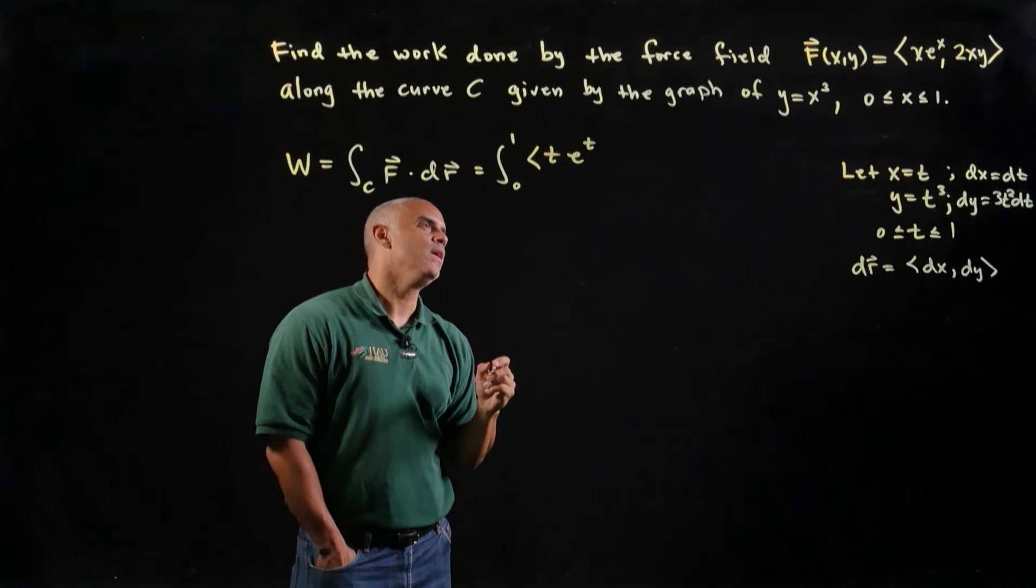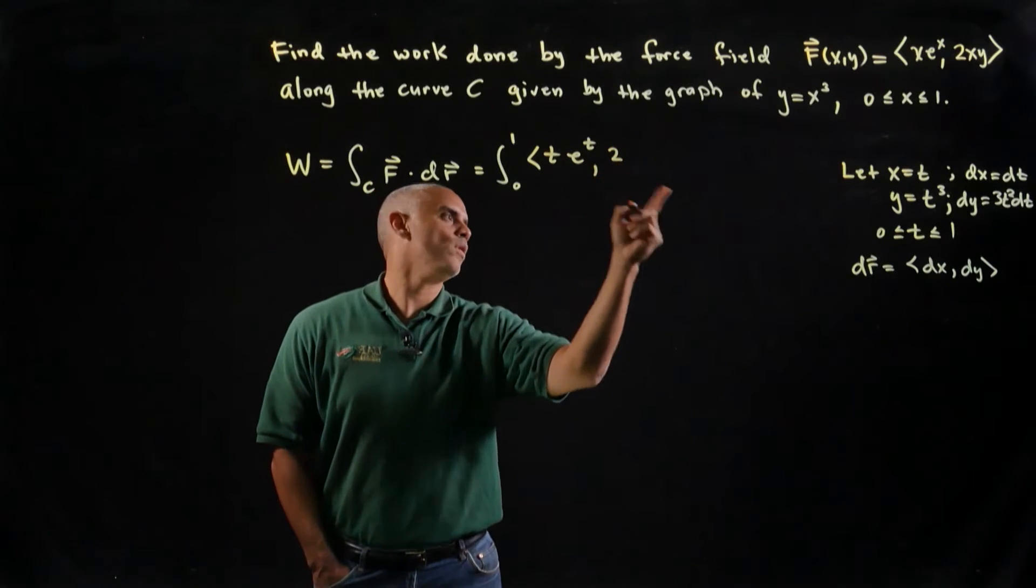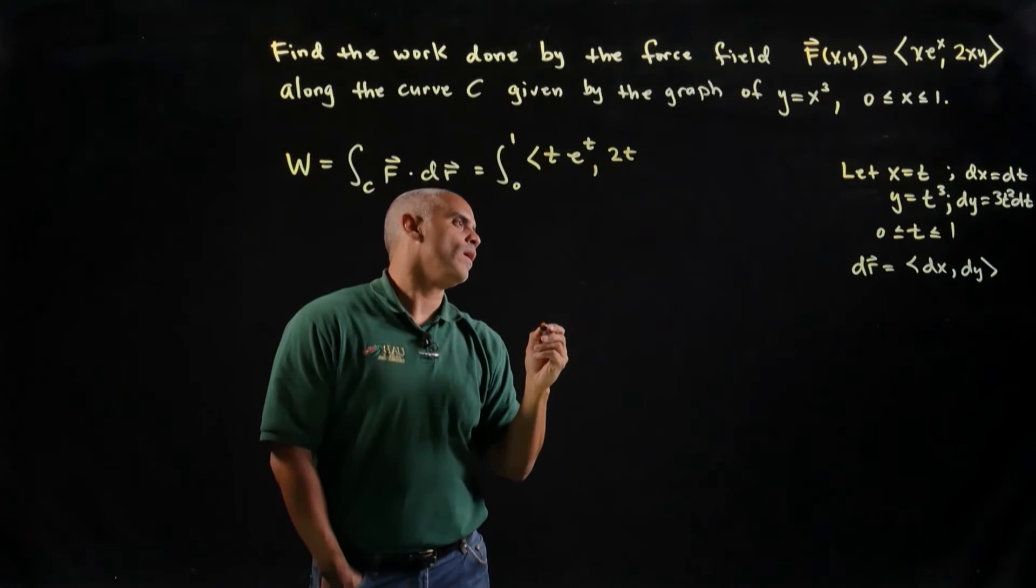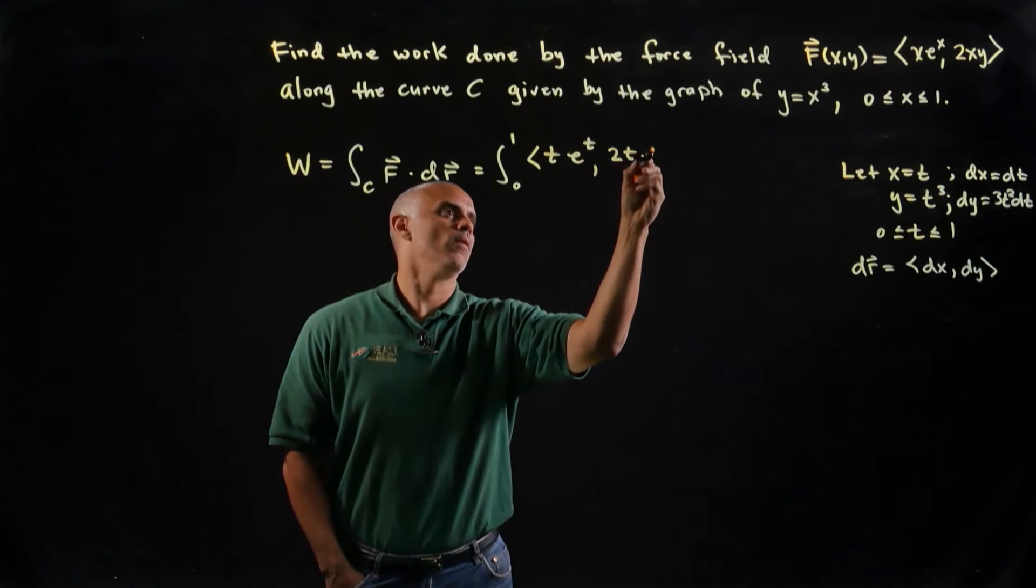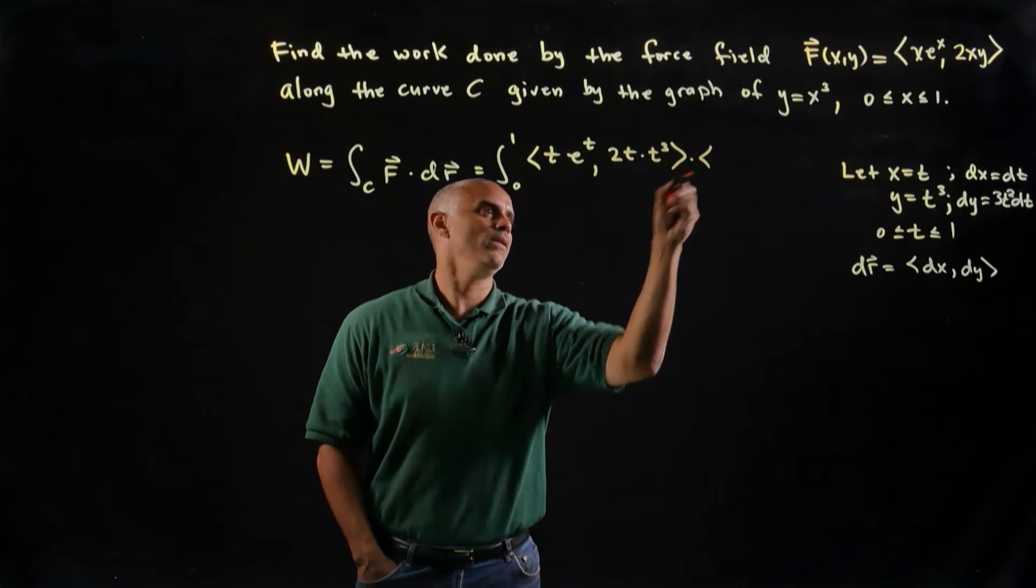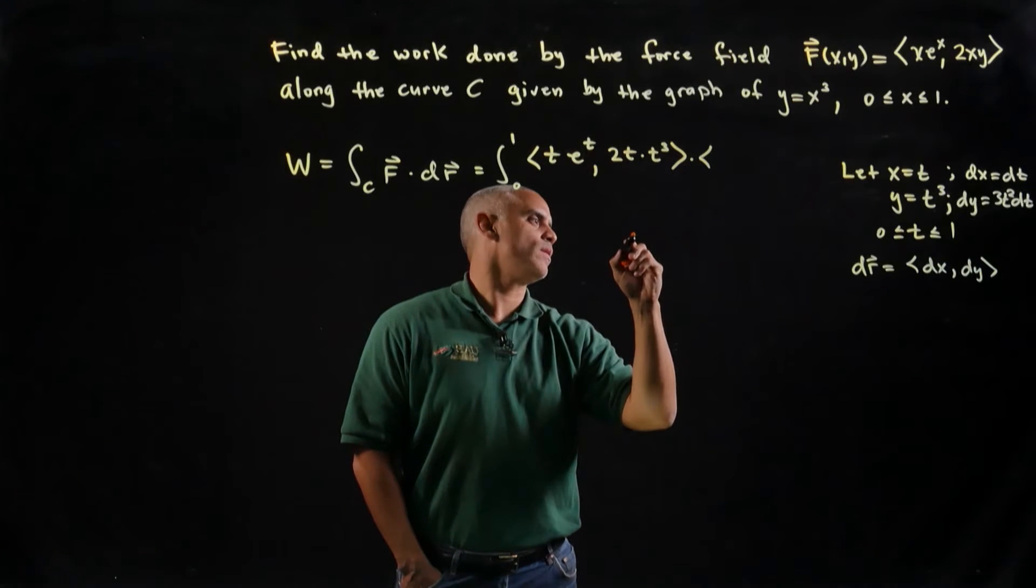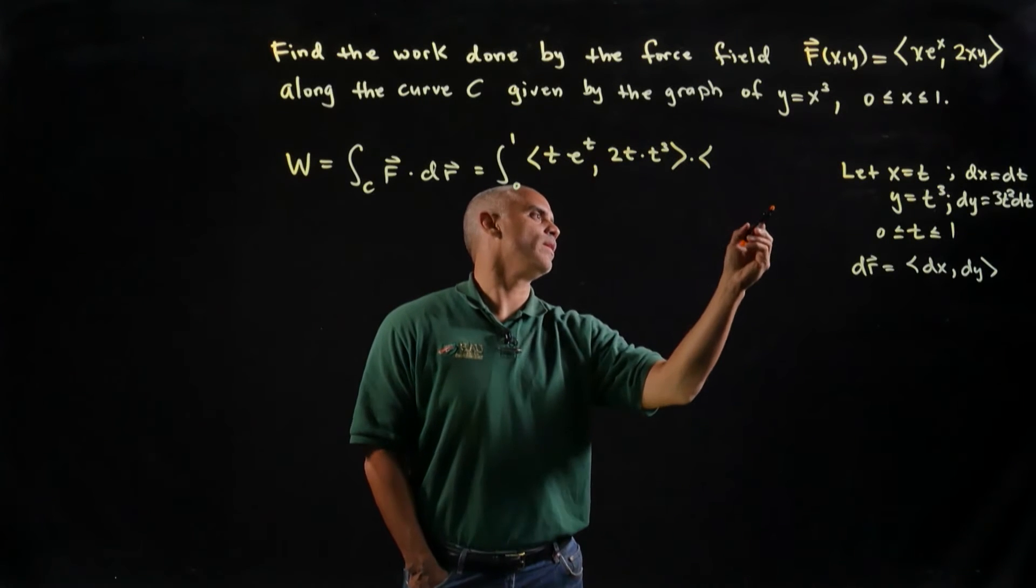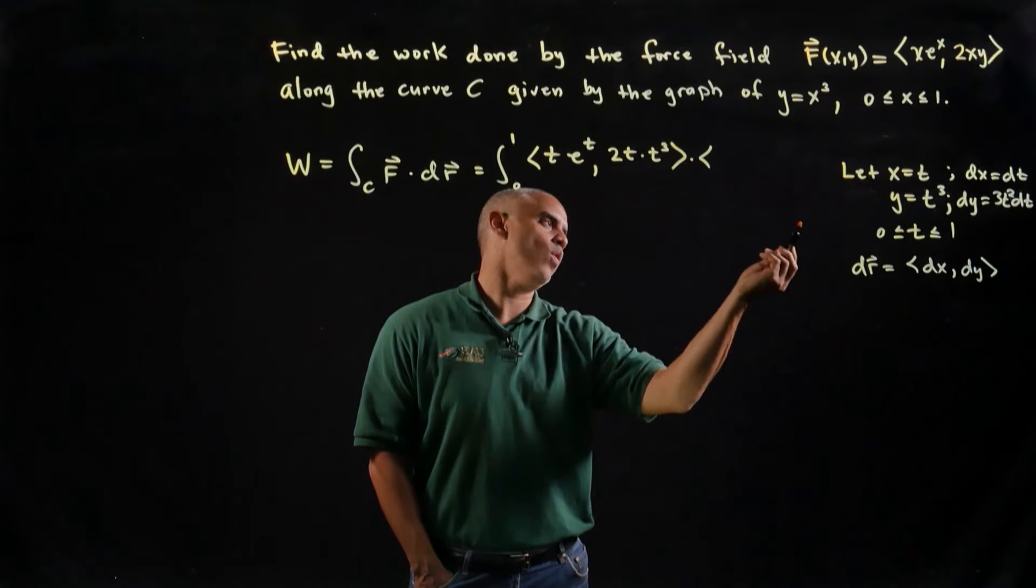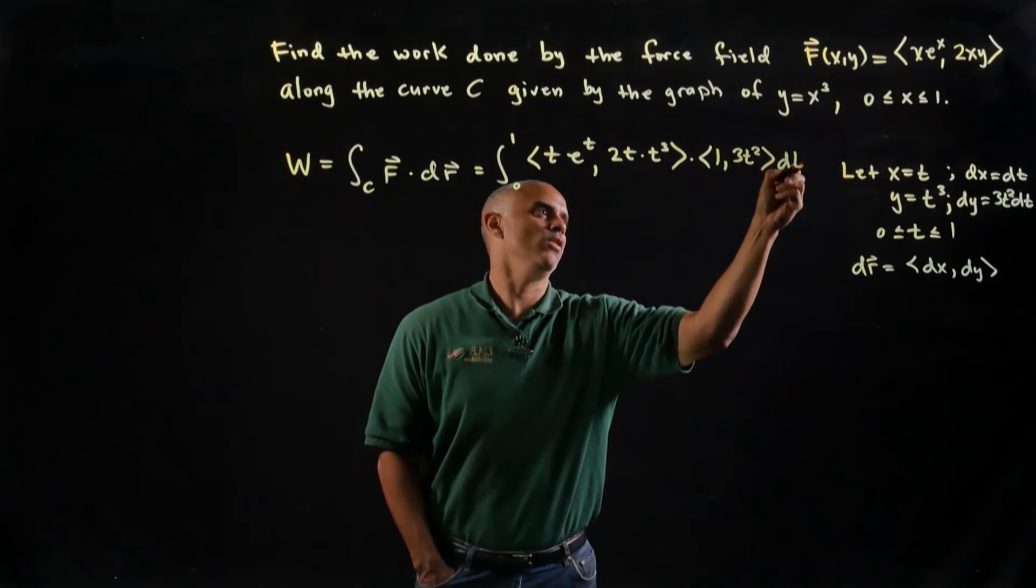And then my second component is 2xy, so I have 2, x is t, and y is t cubed. That's my force dotted with my dr, so I write my vector dx dy, so I get dt, or 1, let's just write as 1, 3t squared, and let's bring the dt on the outside of the vector.